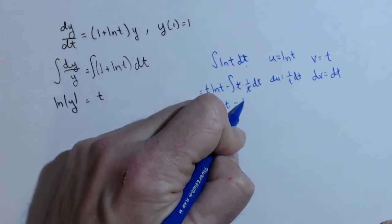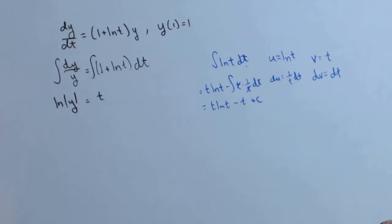So t ln of t minus t plus c. So there was just a quick recap of how to find that.